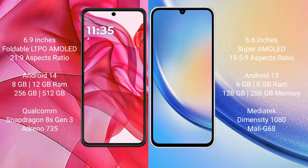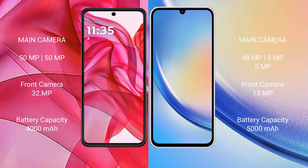The Samsung Galaxy A34 comes with 4GB, 6GB, or 8GB RAM and 128GB or 256GB internal storage, with a MediaTek Dimensity 1080 processor and Mali-G68 GPU. The Motorola Edge 50 Ultra features a dual rear camera setup with two 50-megapixel cameras and a 32-megapixel front camera. The Samsung Galaxy A34 has a triple rear camera setup with 48MP, 8MP, and 5MP sensors, and a 13-megapixel front camera.